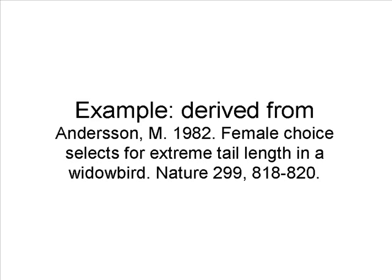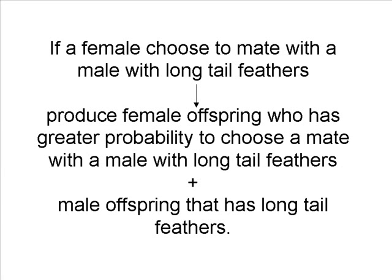The following example has been shown to be a fact in nature. Imagine that you have birds where males have different lengths of tail feathers. If a female chooses to mate with a male with long tail feathers, they will produce female offspring who have a greater probability to choose a mate with long tail feathers, and male offspring that have long tail feathers.